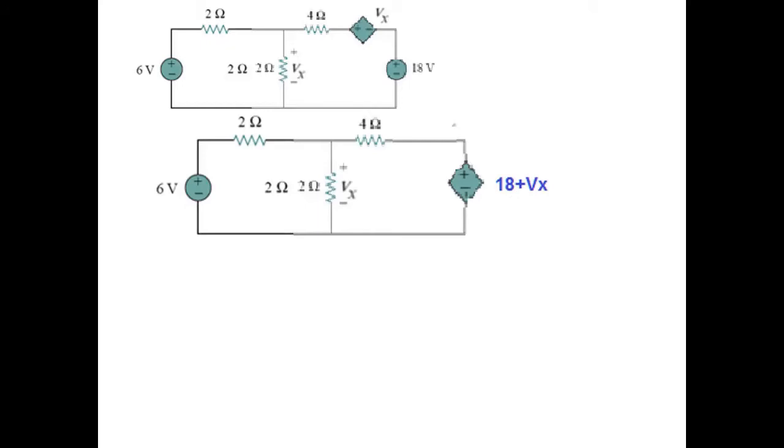This is our new circuit. By adding them, we get a source of 18 plus Vx, with others remaining the same. Now we can convert them into parallel branches or use nodal method.